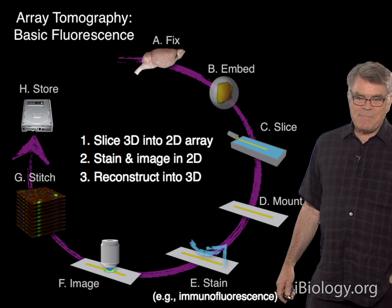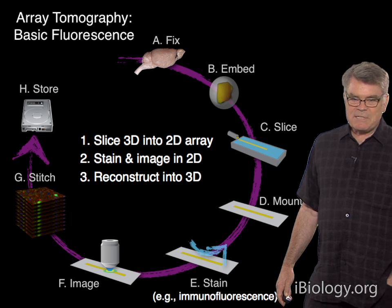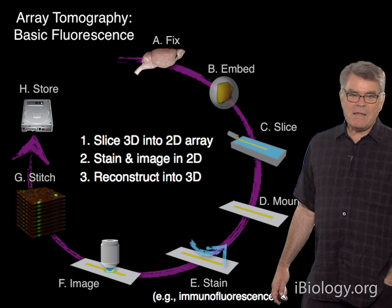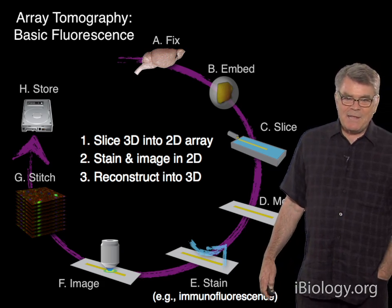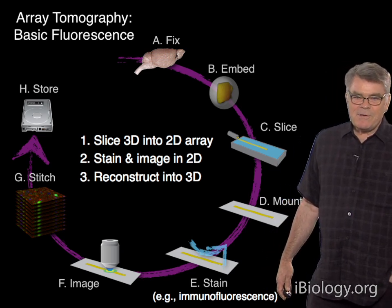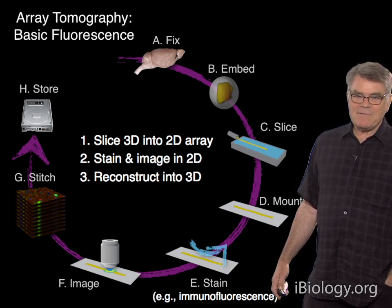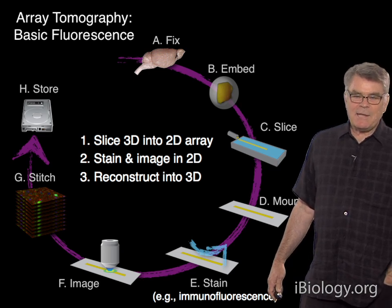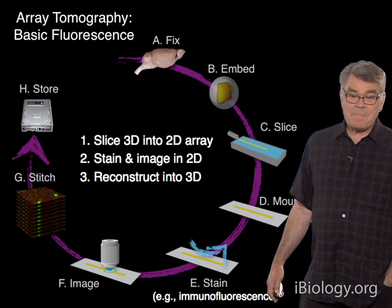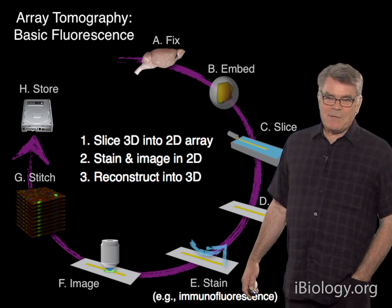The tissue is embedded in plastic, sliced, mounted on a precision glass cover slip, stained, imaged, stitched together by digital computation, and finally stored on a disk for later appreciation or analysis. This boils down into three steps: the three-dimensional specimen is sliced into a two-dimensional array of sections; all the actual staining and imaging is done on those sections in the form of the 2D array; and the acquired 2D images are then reconstructed into the form of the 3D image in the computer.